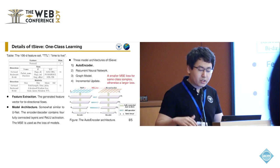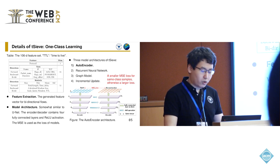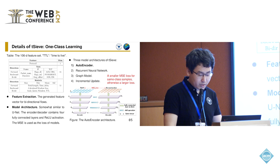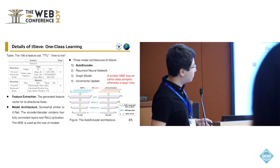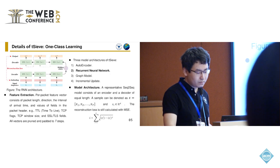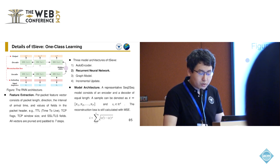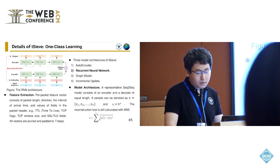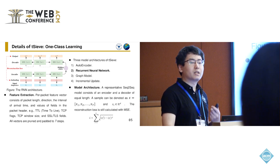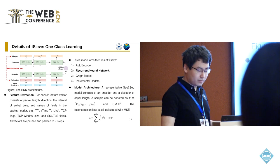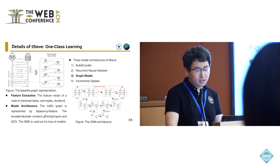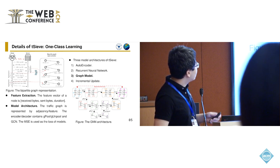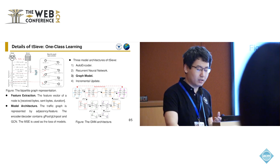Trident is designed with three components, as the figure shows. The first component maintains one-class learners for known classes and provides three model architectures. The first is an autoencoder, which uses tabular traffic features. The second model uses a sequence-to-sequence structure to represent the sequential features of traffic samples, such as packet length. The third model is GNN, which learns graph features based on traffic interaction — we can model the traffic interaction as a graph and use GNN for inference.